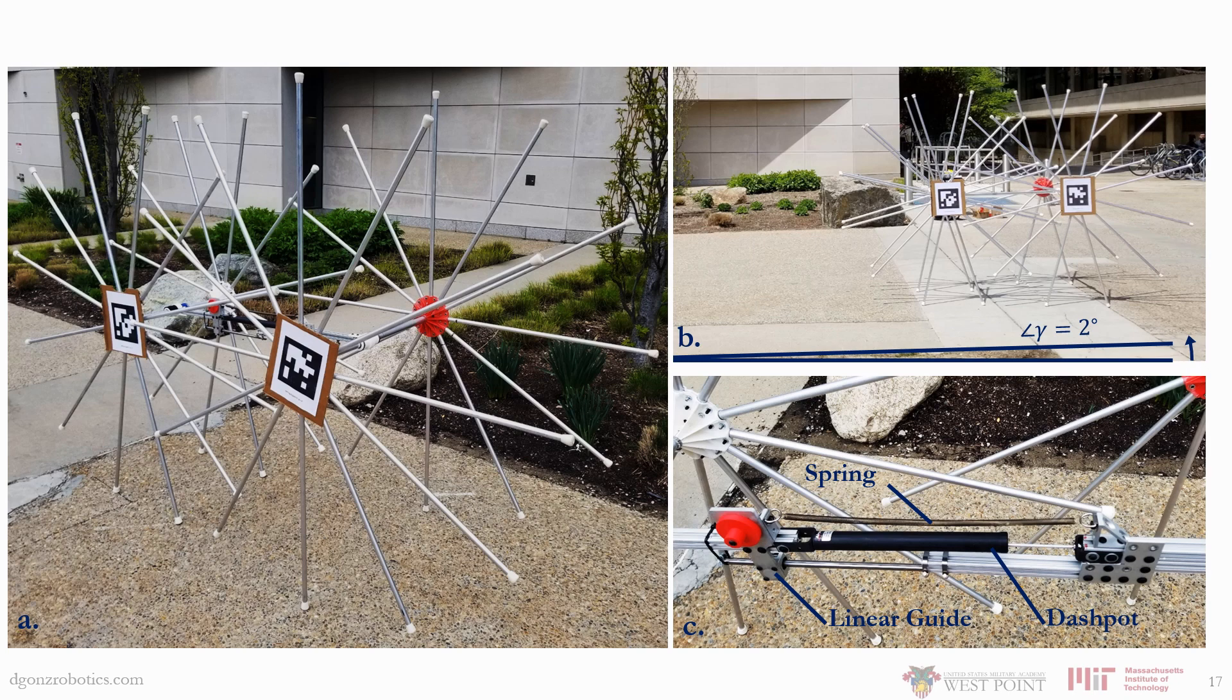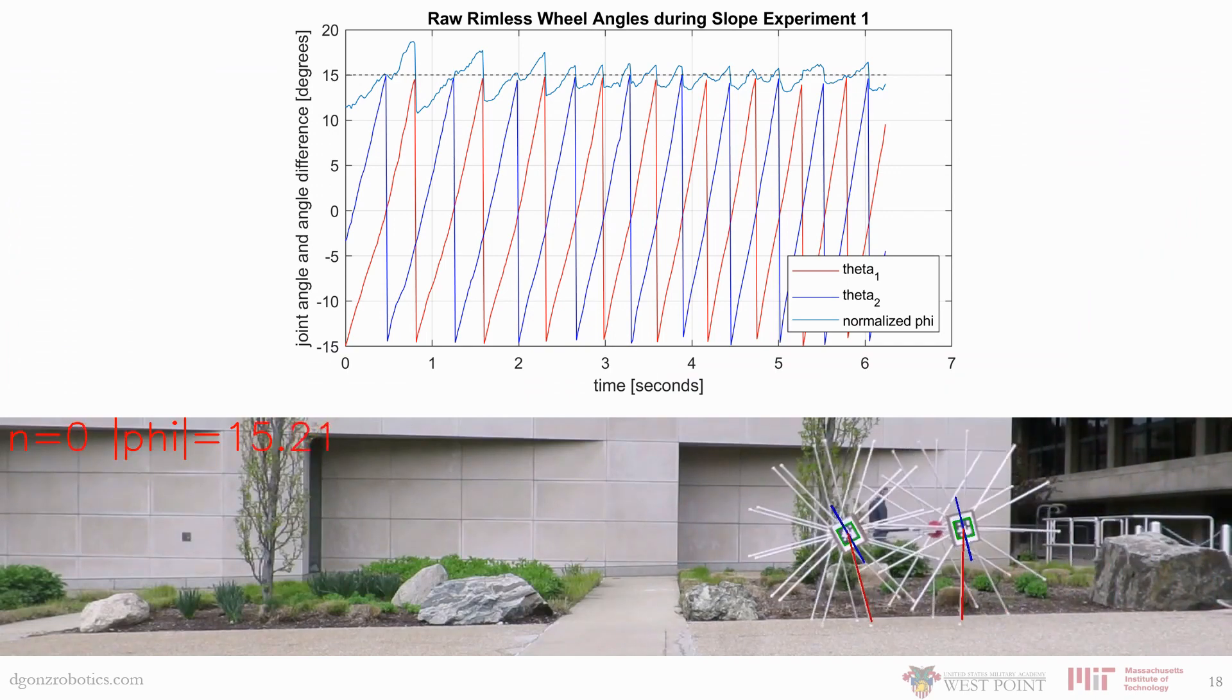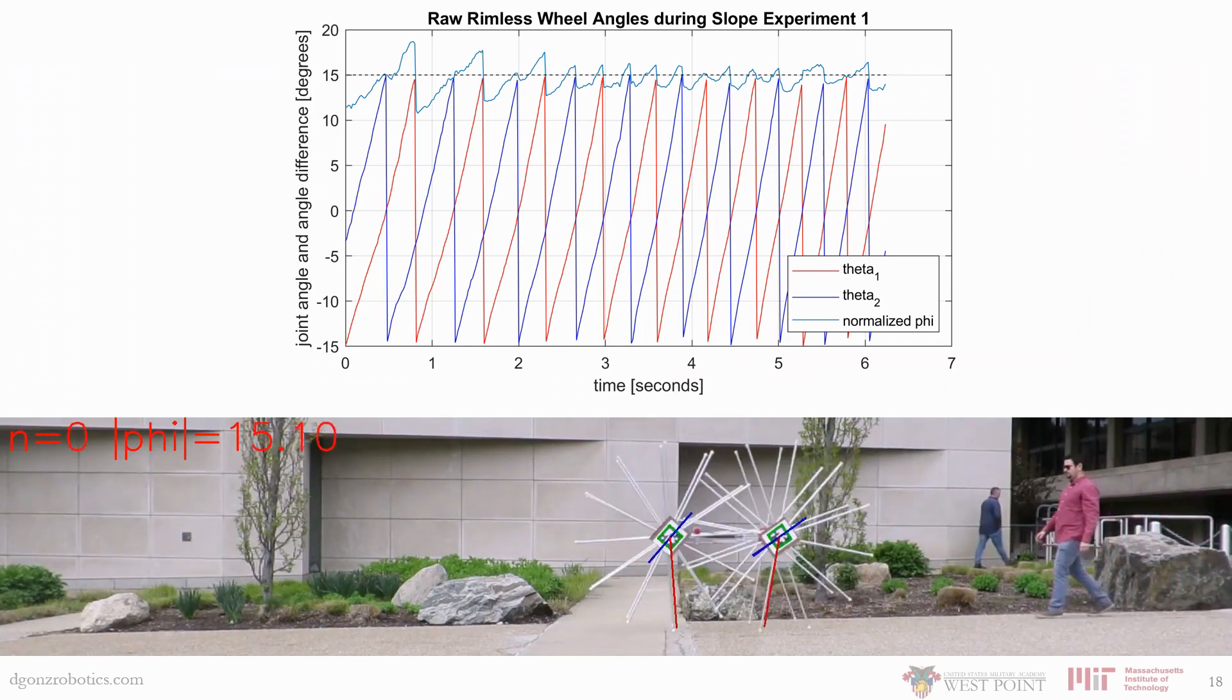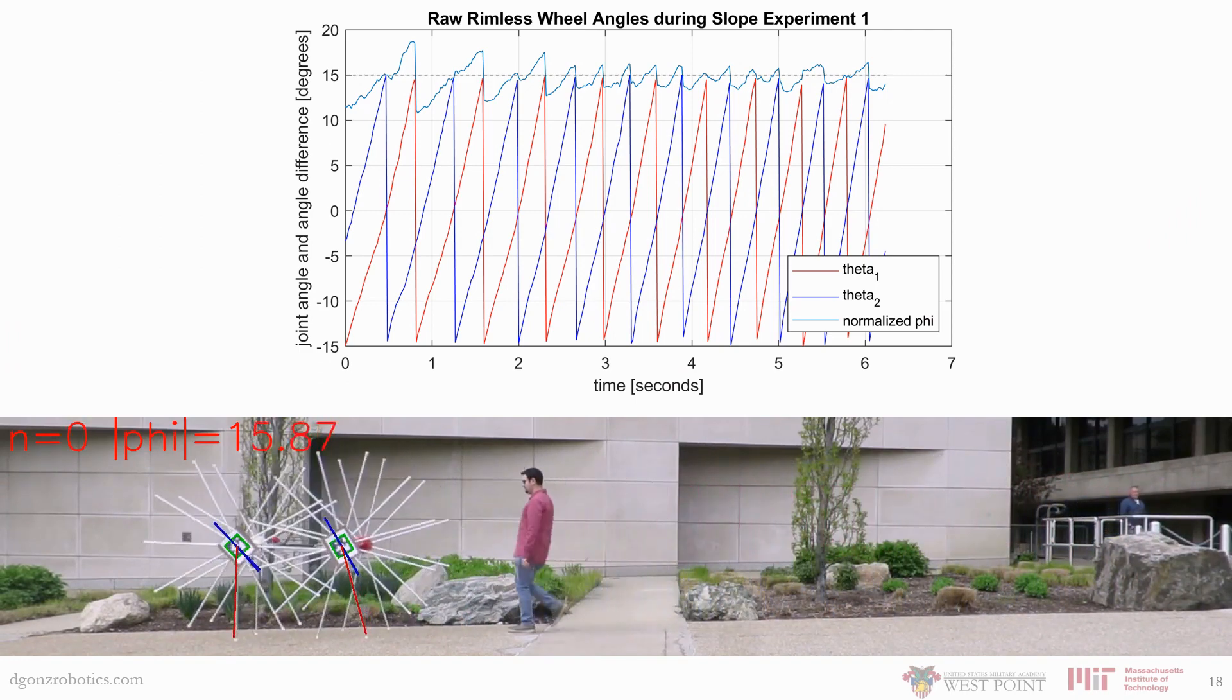A physical, coupled pair of rimless wheels was fabricated to achieve a human-like step length of 15 degrees and a leg length of almost 1 meter, just like the simulation. The wheels were sent down a gentle slope with an initial out-of-phase condition. By tracking phi, the difference between theta one and theta two, convergence can be observed in under 10 steps.